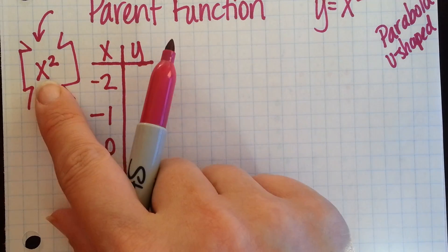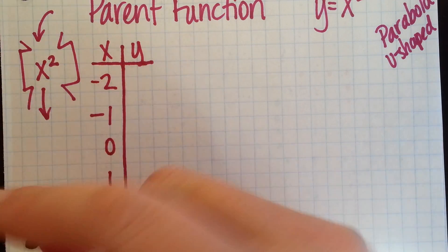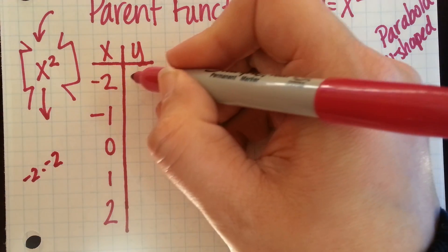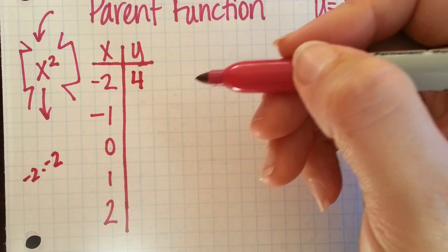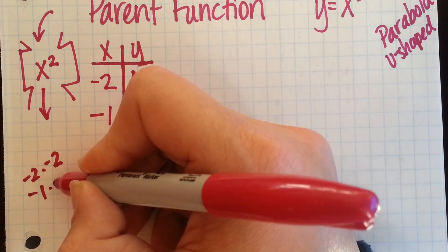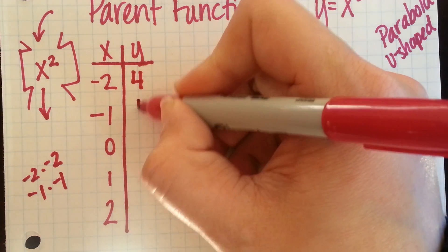So, negative 2. If I take negative 2 and put it in our function machine, that's negative 2 squared. So that's negative 2 times negative 2. That would give us a positive 4. If I did the same thing with a negative 1, throw it in and square it, that would be negative 1 times negative 1, which would give me a positive 1.